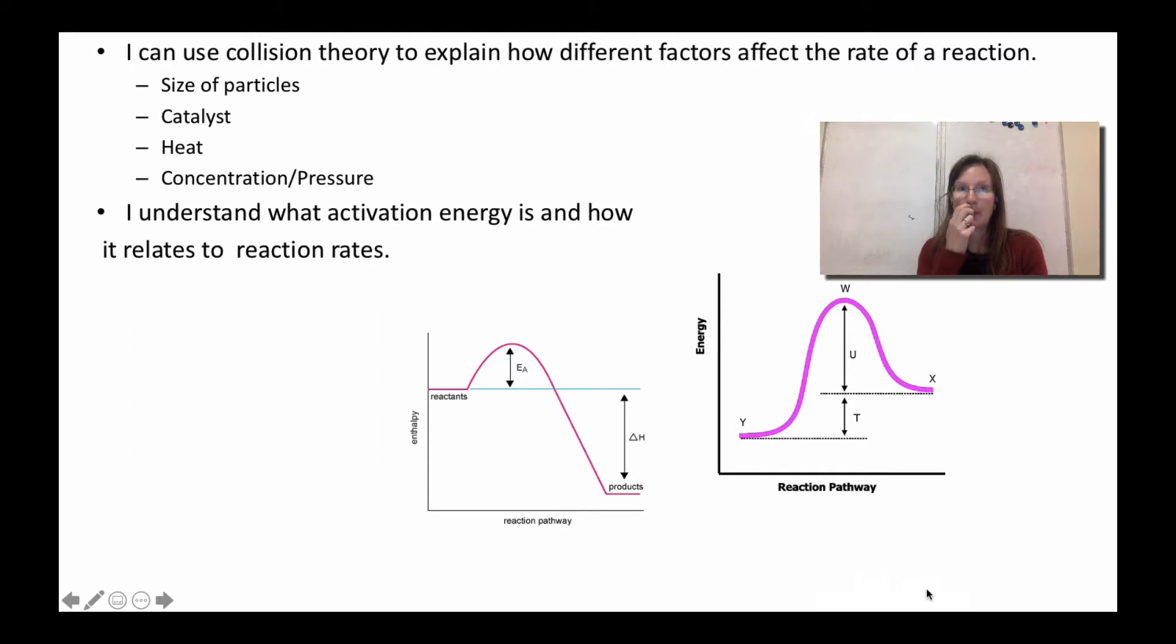First, I can use collision theory to explain how different factors affect the rate of a reaction. Remember, in order for a reaction to happen, collision theory is the idea that particles have to hit with enough energy, so they have to hit with the activation energy so they can get over that hump, and they have to hit with the correct orientation so that bonds are able to be broken and new bonds are able to be made. Collision theory is about energy and orientation, so the things that affect it are the things that affect the energy or the orientation.